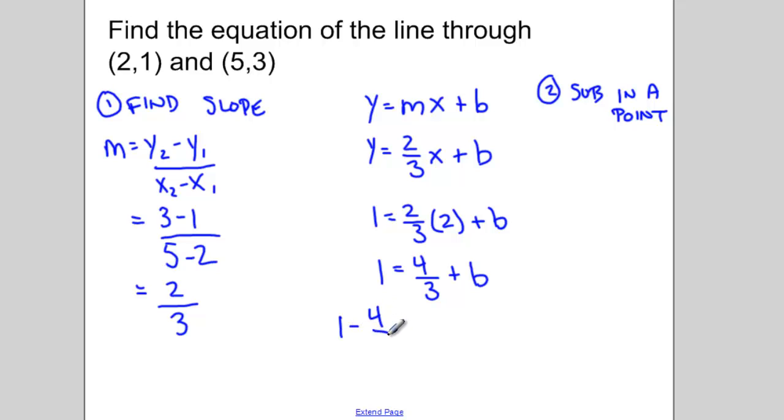1 take away 4 thirds equals b. And now you can evaluate this on your calculator. And you should get negative 1 third equals b. So our equation of the line would be y equals 2 thirds x minus 1 third.